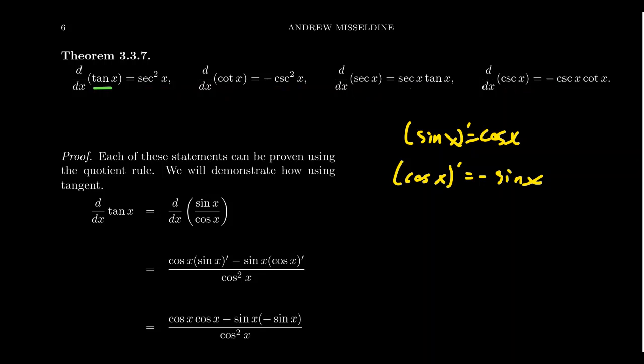Now that might seem like a lot to memorize, but let me give you a little mnemonic device to help you out. You'll notice that of the six trigonometric functions they come into two categories: those with the prefix 'co' in their name and those who don't. You have the co-labeled functions like cosine, cotangent, and cosecant.